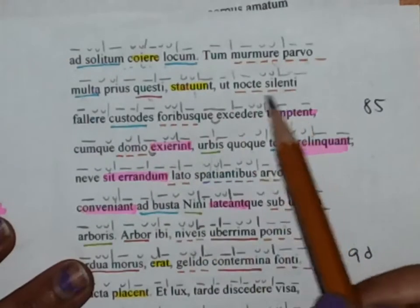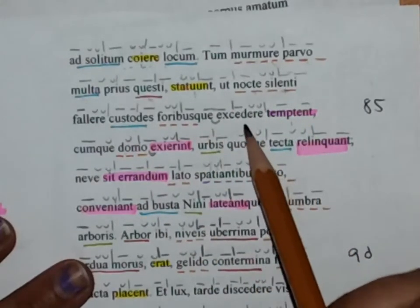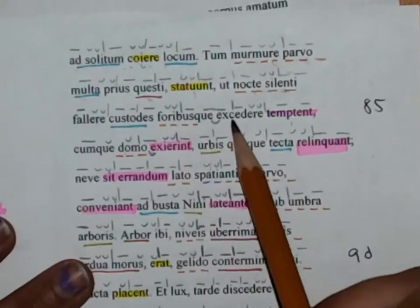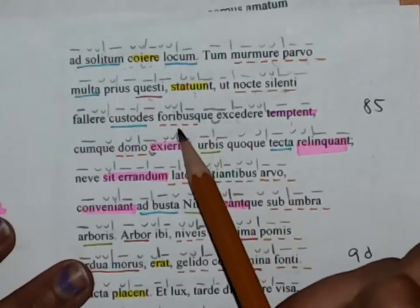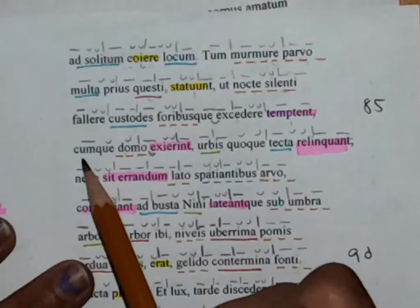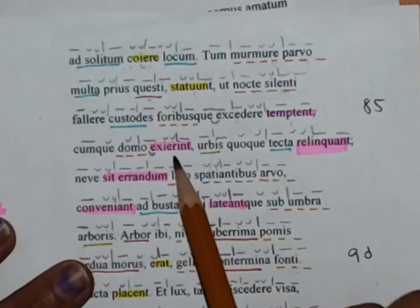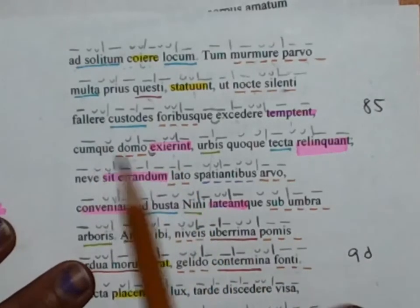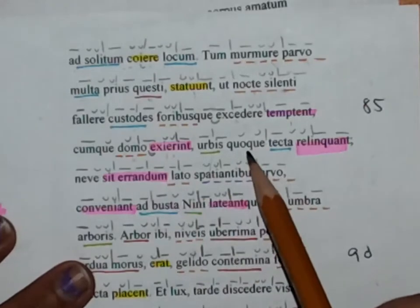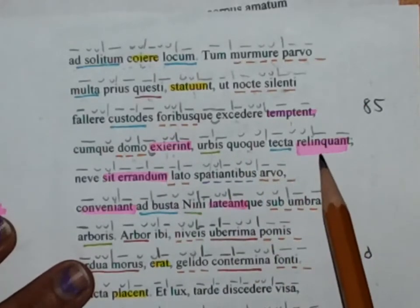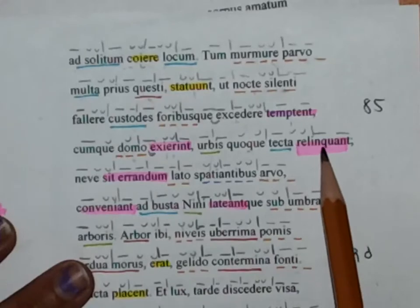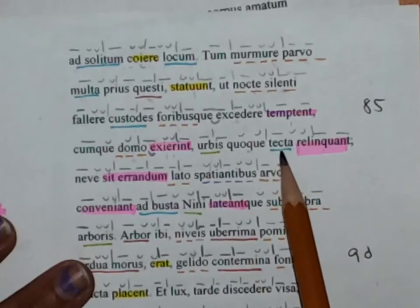Within the silent night, and to depart from, to go out from the doors. And when they had exited from the house—this is a cum clause—they would leave behind the houses.